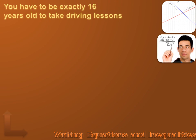Let's use these symbols to describe a couple of real-world situations. Say you have to be exactly 16 years old to take driving lessons. We're going to call D the age you need to be to take driving lessons. D has to be exactly 16, so we write D equals 16. The age you need to be to take driving lessons is exactly 16.